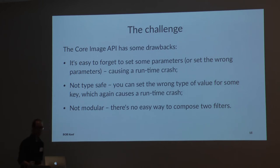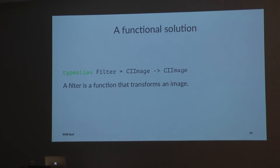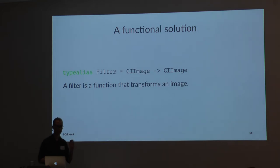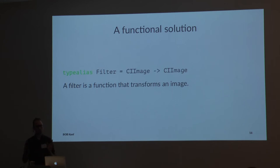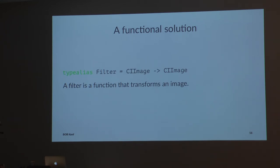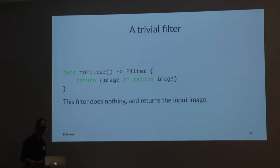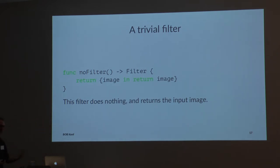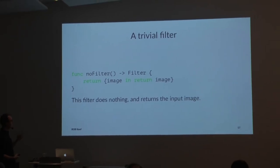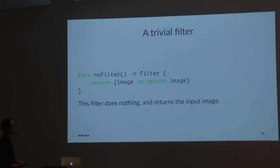So I want to present a slightly more functional solution in Swift. I'm going to introduce a new type — you can substitute 'Filter' globally with the function type CIImage to CIImage. So a Filter is just a function that transforms an image. I haven't defined any filters yet, just specifying what the type called Filter will be: a function from CIImage to CIImage.